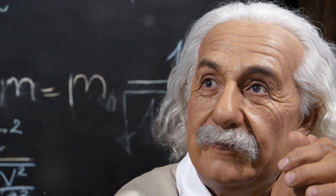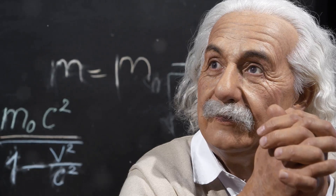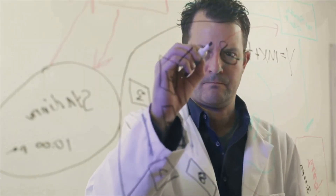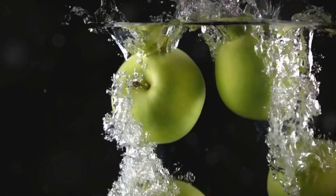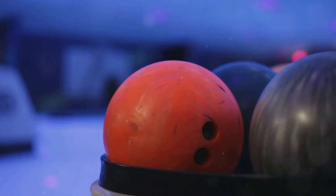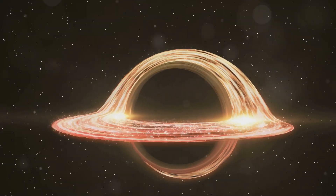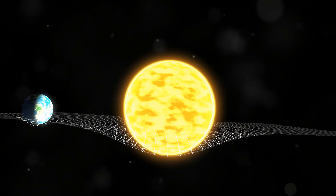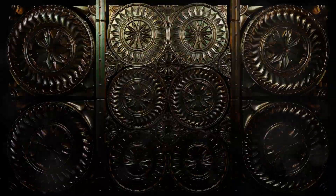Einstein's vision: warping the fabric of space and time. In the early 20th century, Albert Einstein revolutionized our understanding of gravity once again. He proposed the theory of general relativity, presenting a new way of thinking about gravity. Einstein argued that gravity is not a force — instead, it's a curvature in the fabric of space-time caused by the presence of mass and energy. Imagine a bowling ball placed on a trampoline: the ball causes the surface to dip, similar to how massive objects warp space-time. This curvature influences the motion of objects, explaining why they move towards each other — they simply follow the curves in space-time created by massive objects.